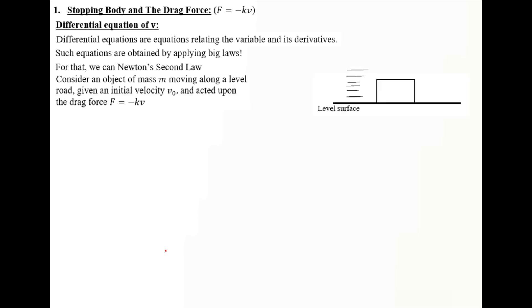Let's kick things off with the differential equation of V. Differential equations are equations relating variables and their derivatives. Such equations are obtained from fundamental laws like Newton's second law. Now consider an object of mass M moving along a level road, given an initial velocity V0 and acted upon by the drag force F equals minus KV.